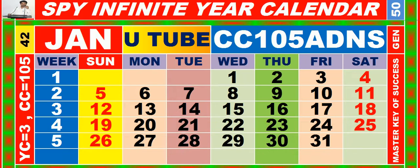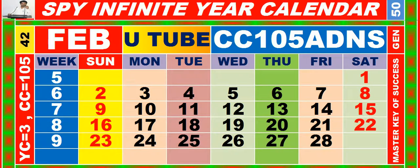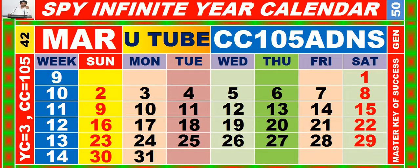Calendar for the month of January having calendar code equal to 105. Calendar for the month of February having calendar code equal to 105. Calendar for the month of March having calendar code equal to 105.